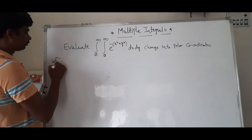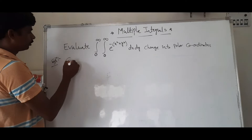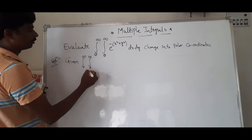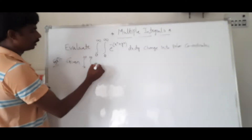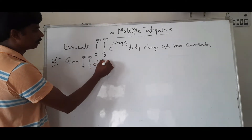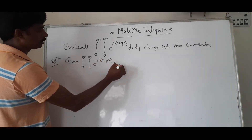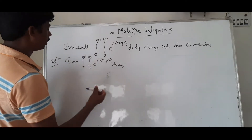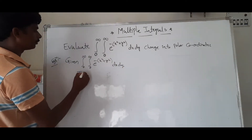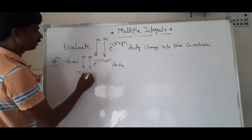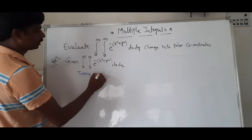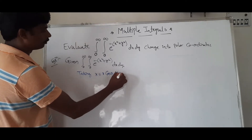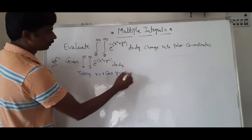Solution. Given integral 0 to infinity, integral 0 to infinity of e to the power of minus (x² + y²) dx dy. Now, taking x = r cosθ and y = r sinθ.